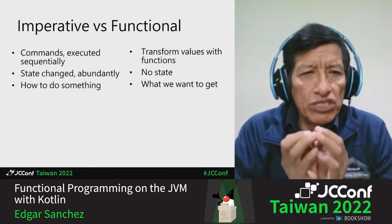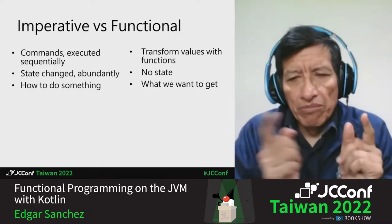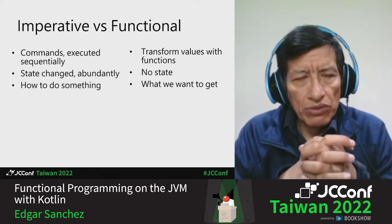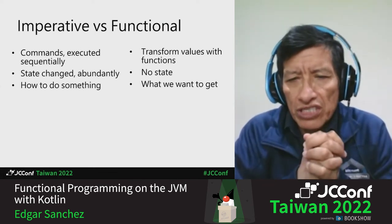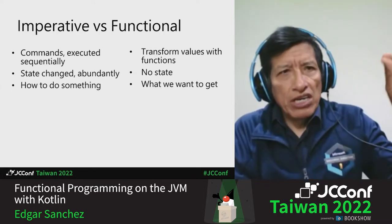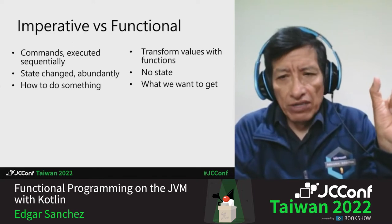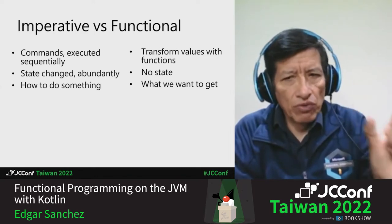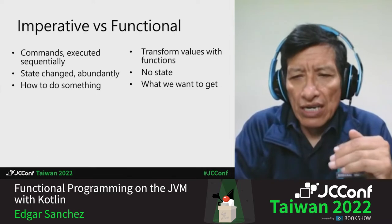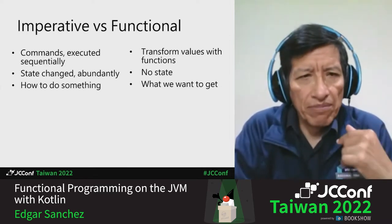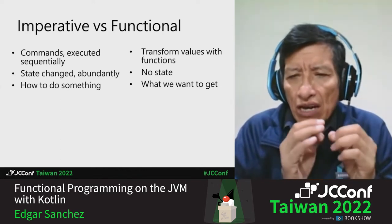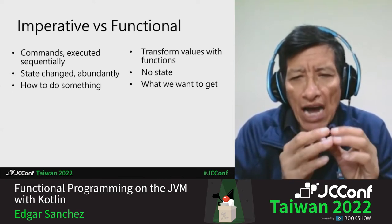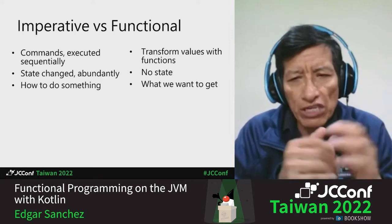Furthermore, you use state — for example, memory cells or variables to store the current values, the current state of the system. For example, you can put here the total amount of an order, and then it starts at zero, then says five, then says 11, and so on. So you use state and state changes all the time. That's the general idea in imperative programming.